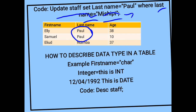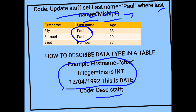To describe data types in a table, by using SQL we are able to describe the data types found in a table — whether it is character, integer, or date — using the DESCRIBE command. Highlight the command and execute or run it; it will show the output. If it is a character it will be indicated as character, if it is integer it will be indicated as integer, and if it is a date it will be indicated as date.